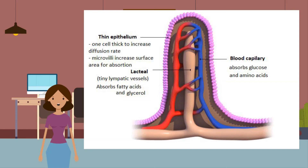An individual villus also has characteristics useful for absorption. They have thin, one-cell-thick walls, so it is easy for nutrients to diffuse through. There are blood capillaries near the surface to connect to the main circulatory system — the blood carries the dissolved glucose and amino acids. There are also lacteals near the surface to connect to the lymph system — the lymph fluid carries glycerols and fatty acids.